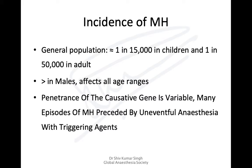In the general population, MH is believed to exist in one in 15,000 in children and one in 50,000 in adults. It is more common in males and affects all age groups. The penetrance of the causative gene is variable, so patients can actually have multiple uneventful anesthetics before manifesting MH.